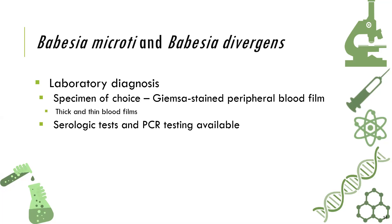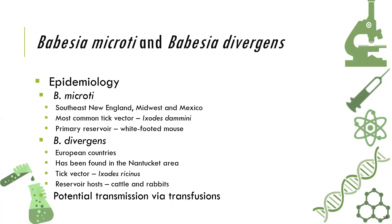Laboratory diagnosis uses the peripheral smear — the thick and thin smear — and serologic testing. For epidemiology, Babesia microti is found in Southeast New England and Midwest Mexico, and the most common tick vector is Ixodes. The primary reservoir of microti is the white-footed mouse. For Babesia divergens, it is found in European countries and has been found in Nantucket areas. The tick vector is Ixodes ricinus, and the reservoir hosts are cattle and rabbits.